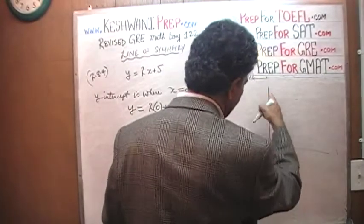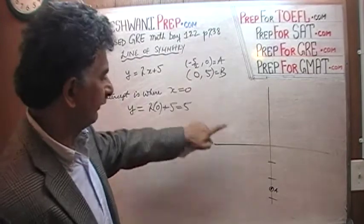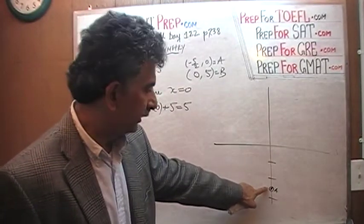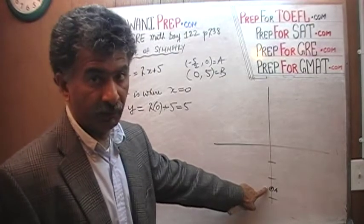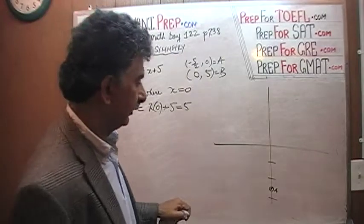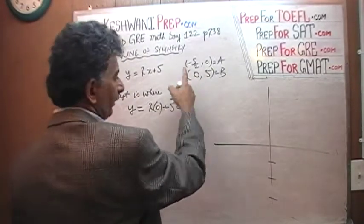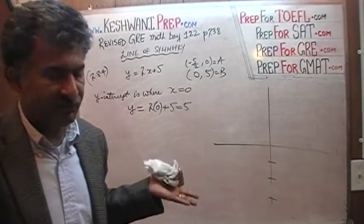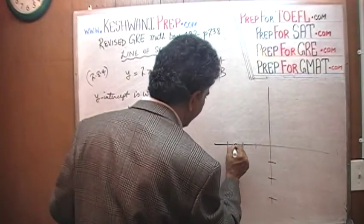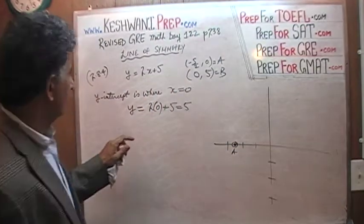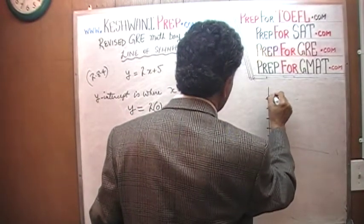Wait — I need to correct myself. I mistakenly plotted the x-intercept on the y-axis. The x-intercept must cut the x-axis, so the correct point A is negative 5/2 and 0 — plotted on the x-axis. And the y-intercept, point B, is 0 and 5 — plotted on the y-axis going up 1, 2, 3, 4, 5. So that's the line.